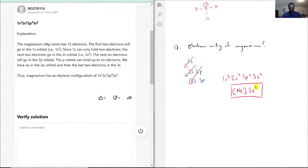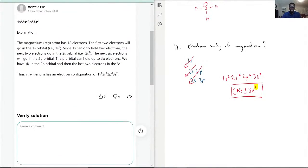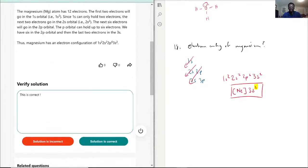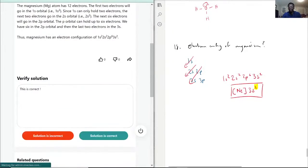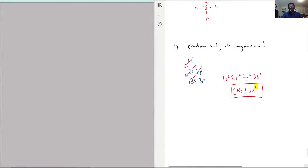So with that being said, this is correct because it goes 1s², 2s², 2p⁶, 3s². So now with that being said, I do believe this is the perfect time to stop right there.